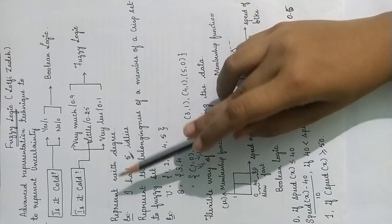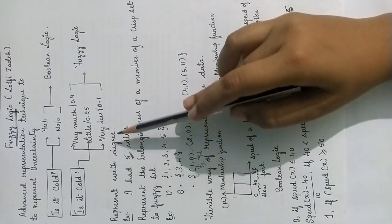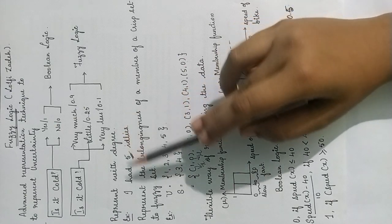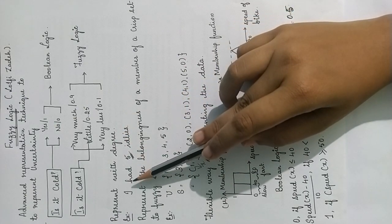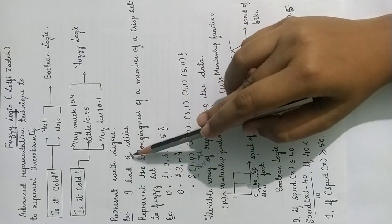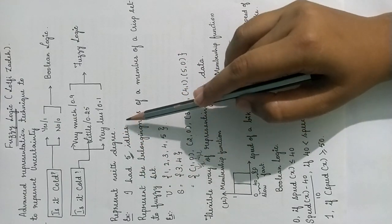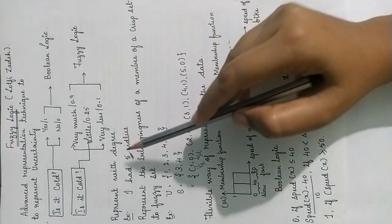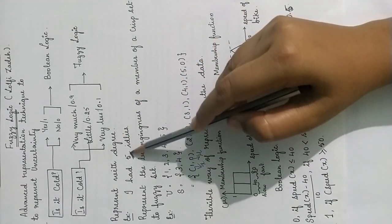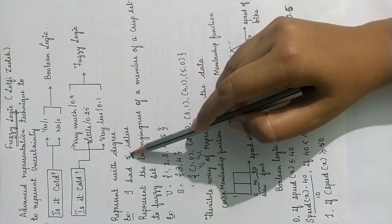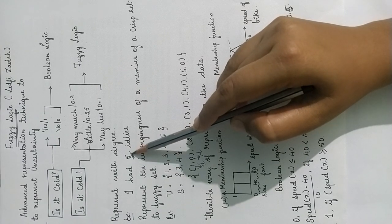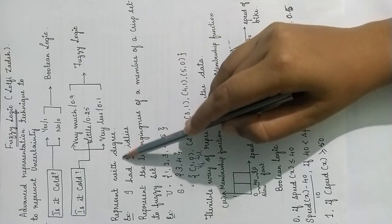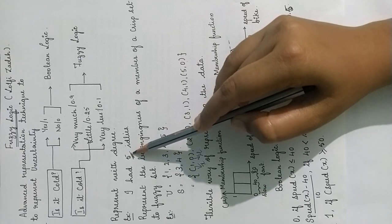The next concept is representing with degree. For example, if I say I had 5 at least today, this 5 represents the degree or the quantity — the number which represents the degree of the value. So this is called representing with degree.